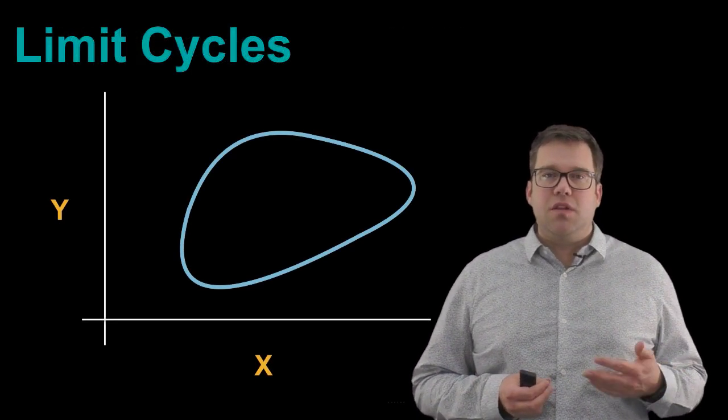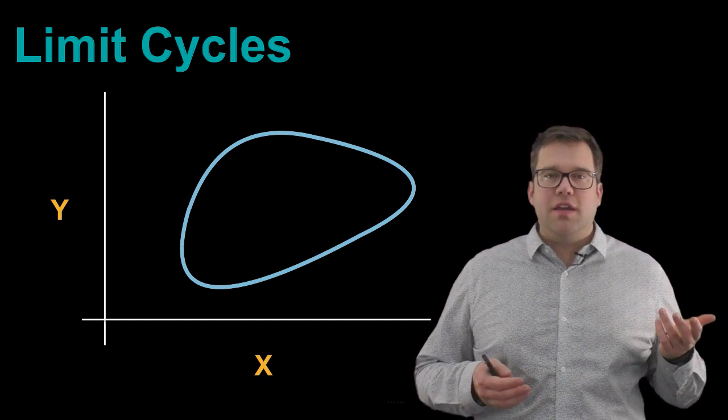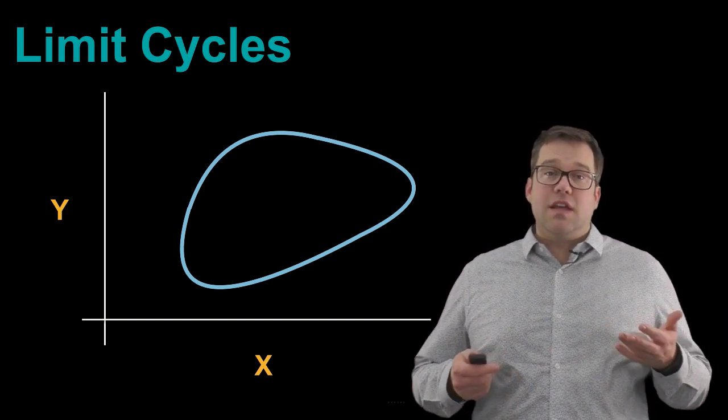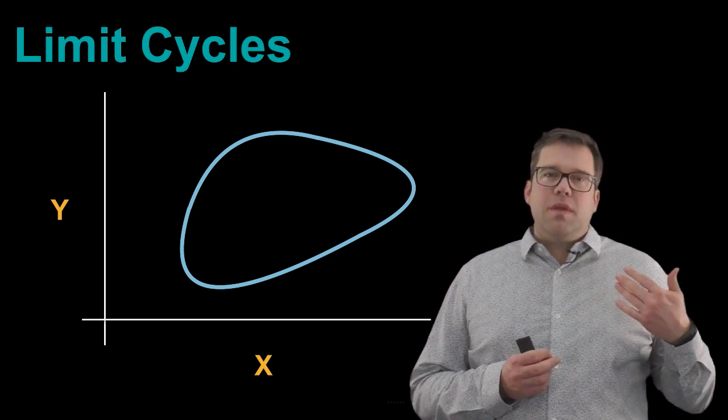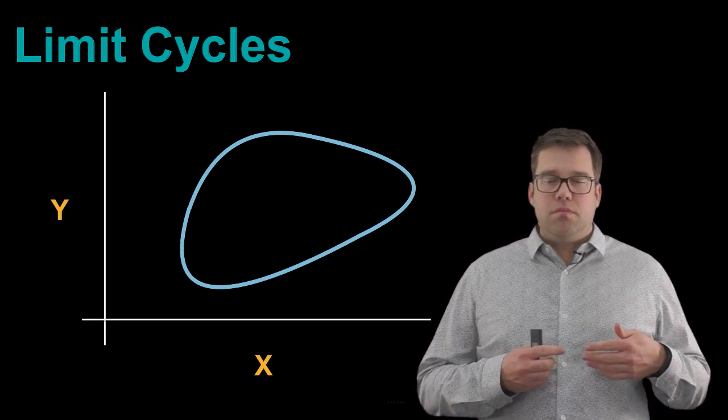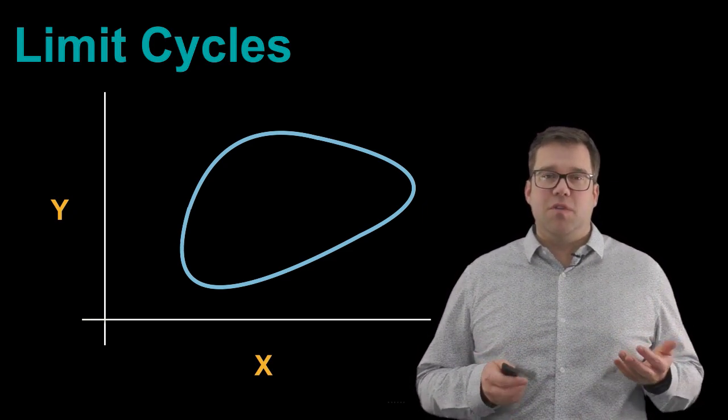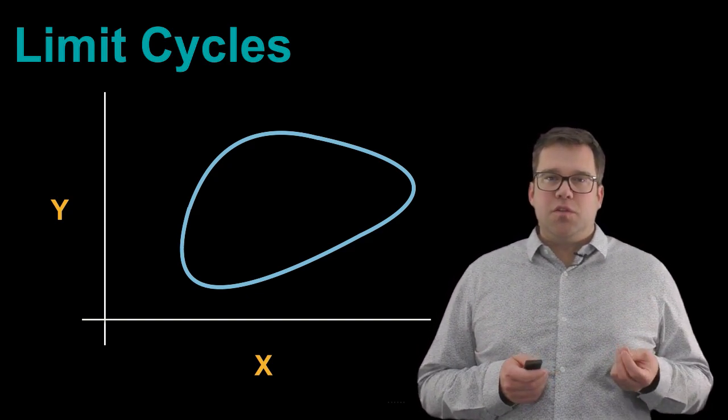So the first is a limit cycle. What a limit cycle is, is imagine you have two parameters, x and y, coupled together through, say, a set of differential equations. The limit cycle is a case where the only way to define the steady state solution to this system of differential equations is through a closed curve rather than a single point.